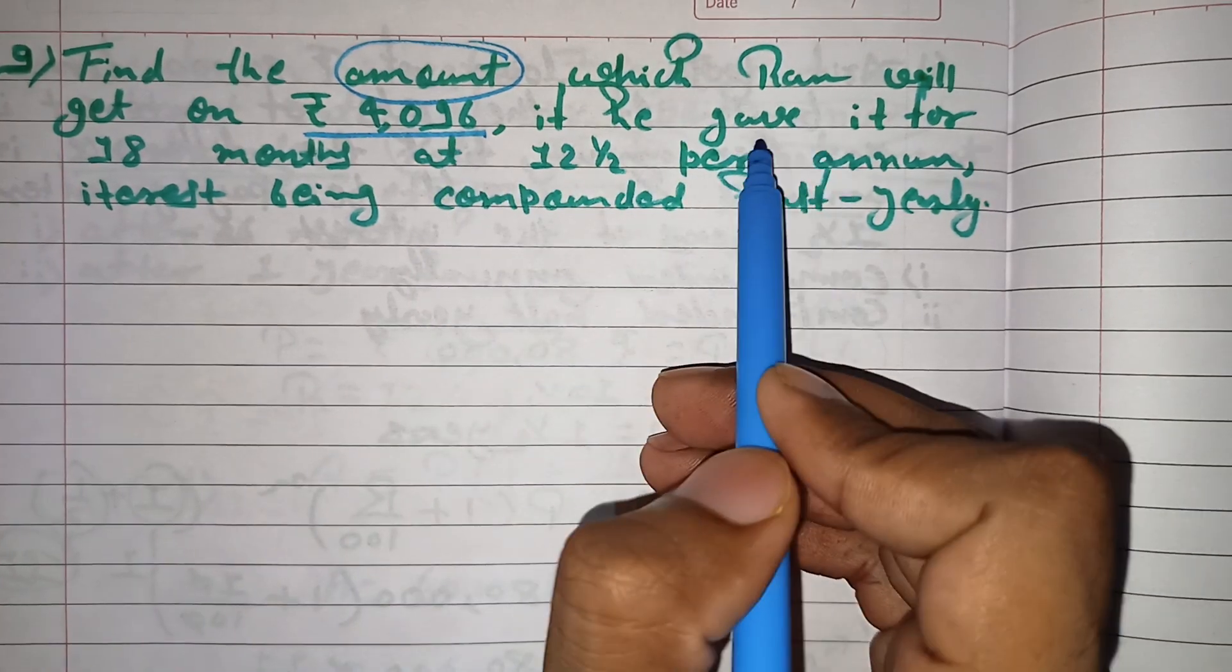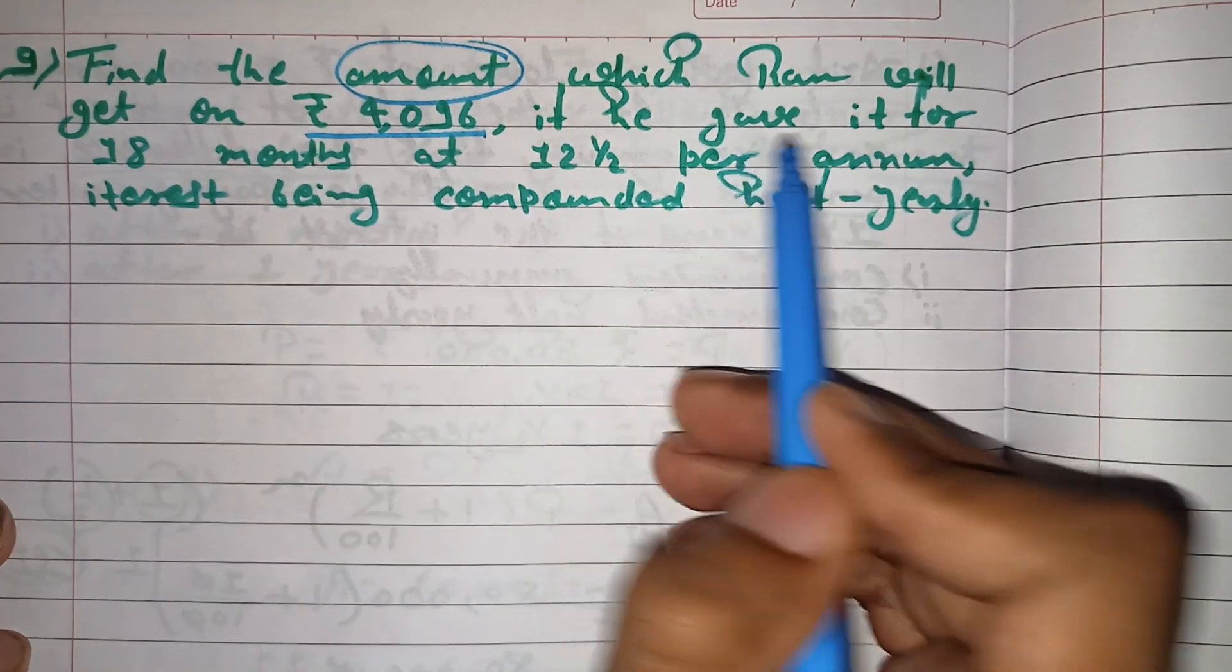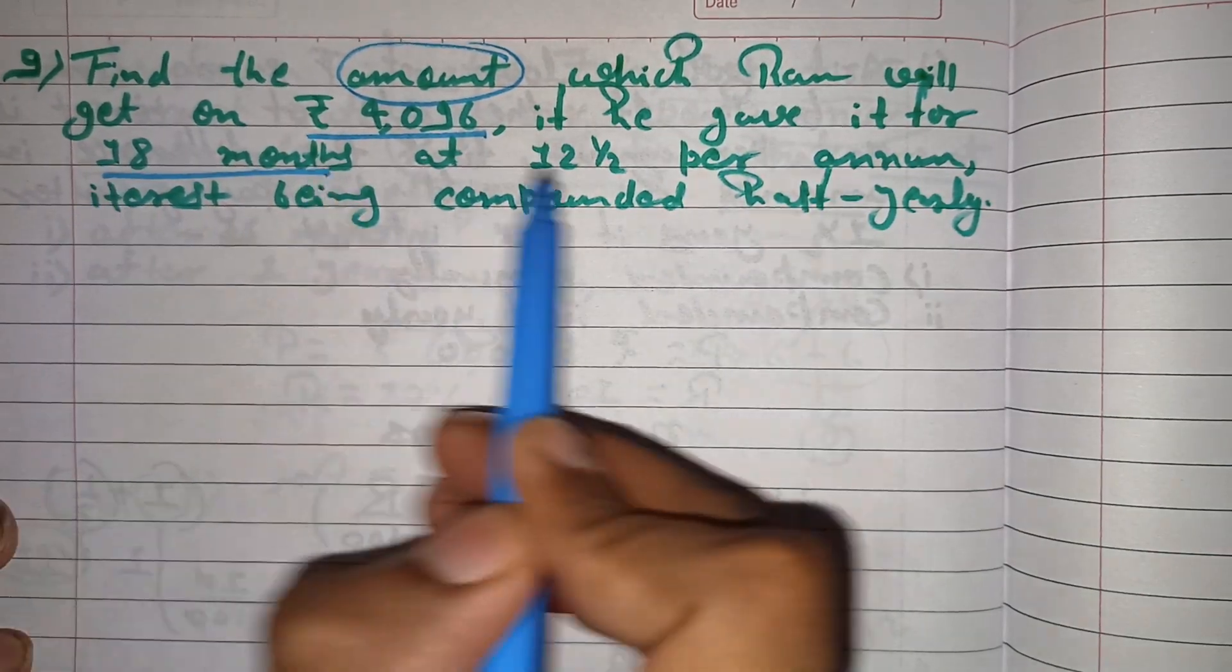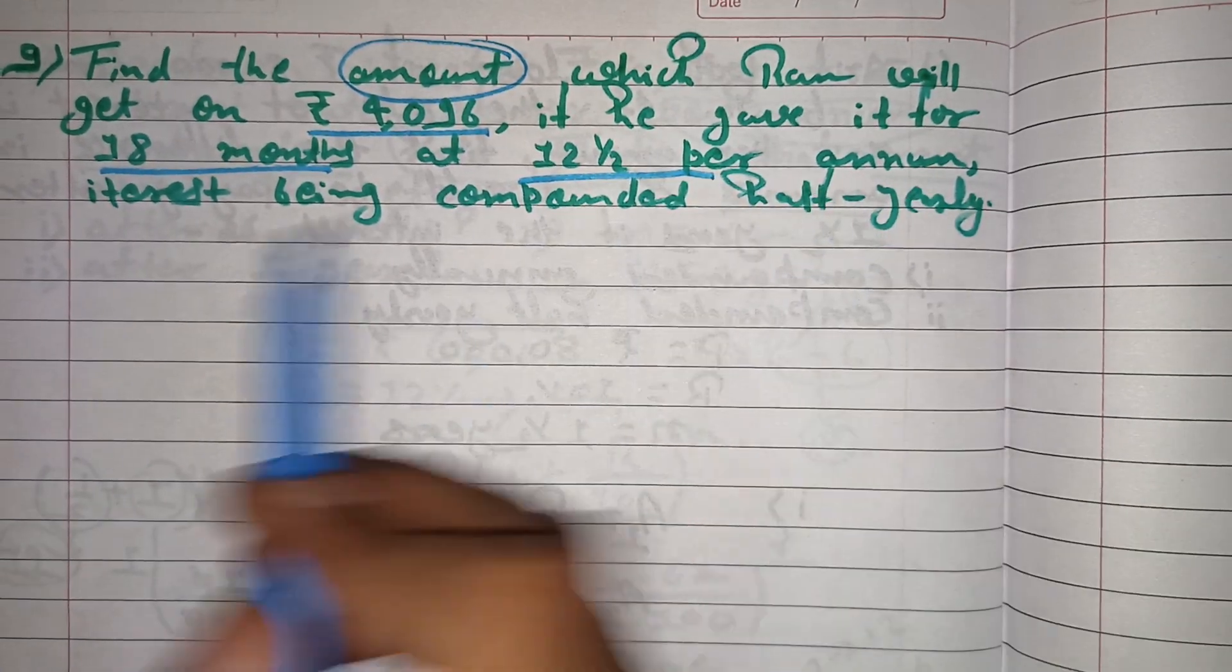At 12 and half percent interest rate per annum, interest being compounded half yearly.